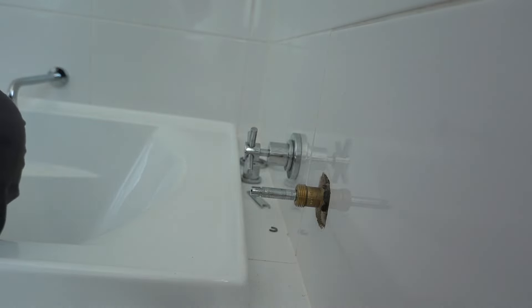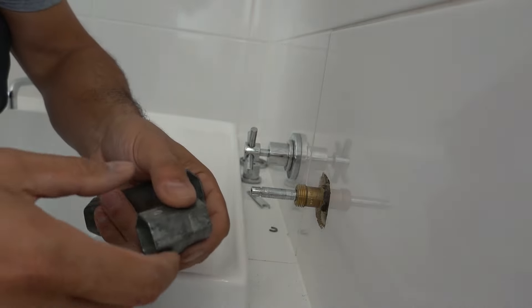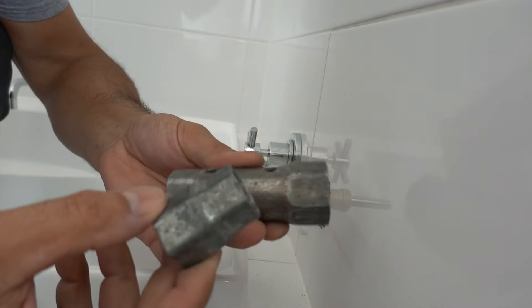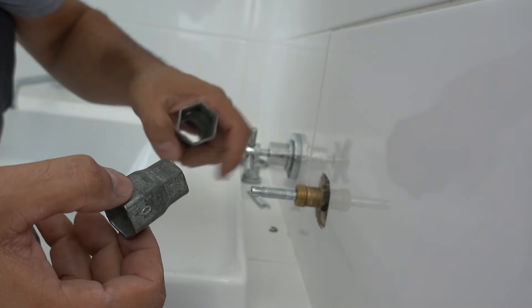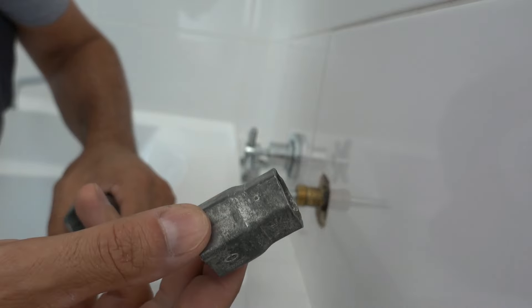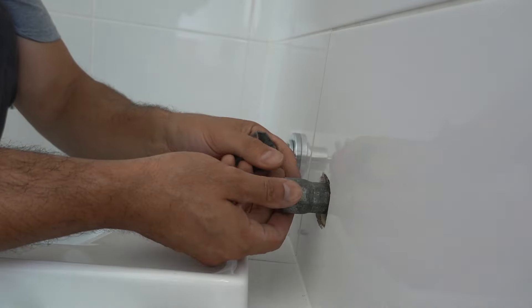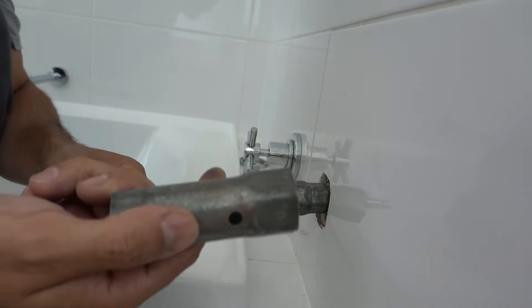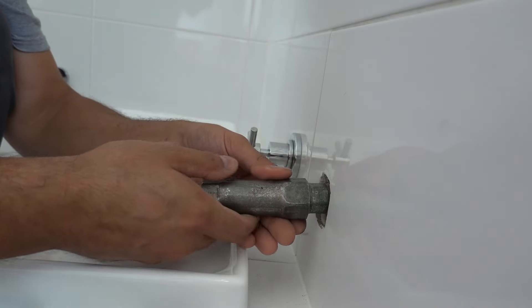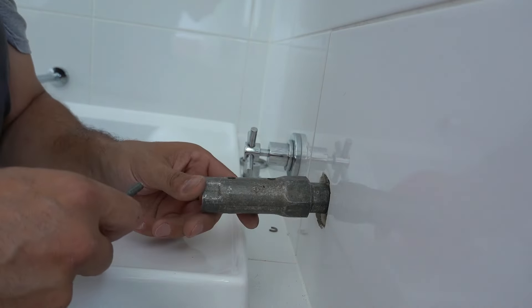Alright, so these are the tube spanners here that are used to remove spindles, especially when they're recessed really deep in. It comes with a whole range of different attachments to fit pretty much any spindle out there. This one here can be put over the top and used as leverage or an extension.